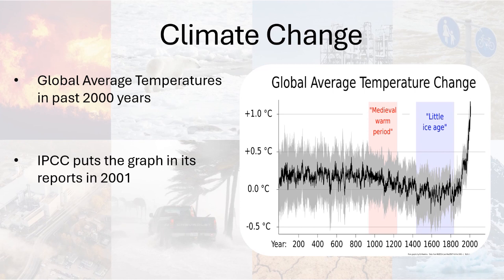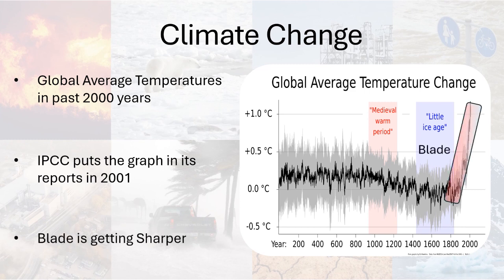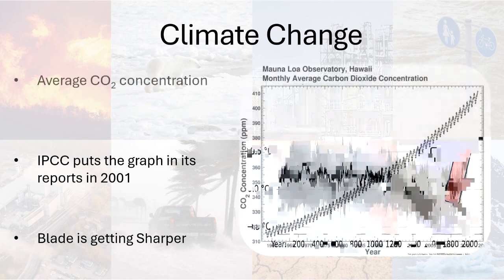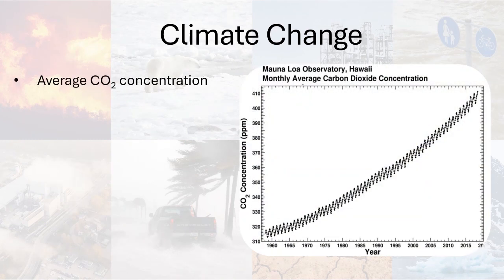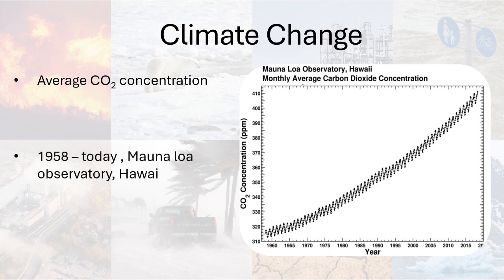However, every year the blade of the stick is getting sharper. The second famous graph is developed by a scientist called David Keeling, which shows the concentration of CO2 gases in the atmosphere on a daily basis since 1958 to this day at Mauna Loa Observatory in Hawaii, and is now well known as the Keeling Curve.